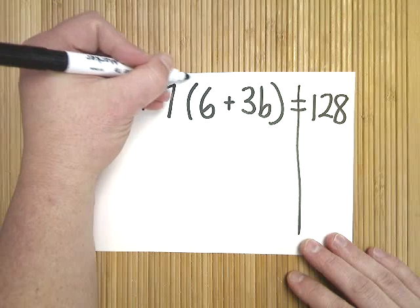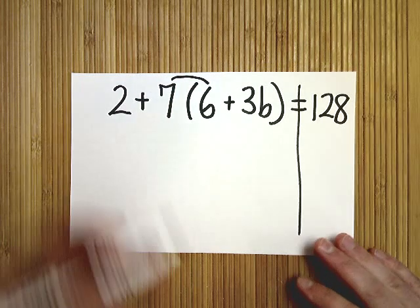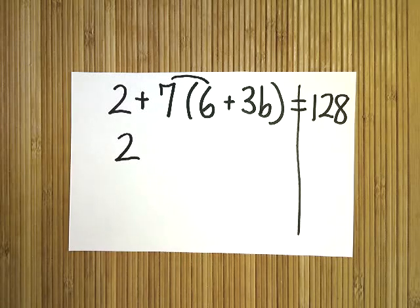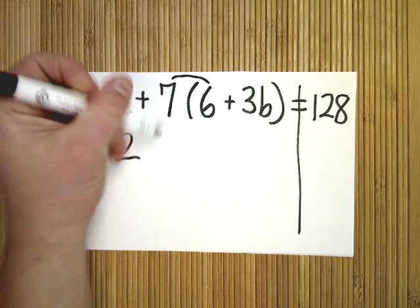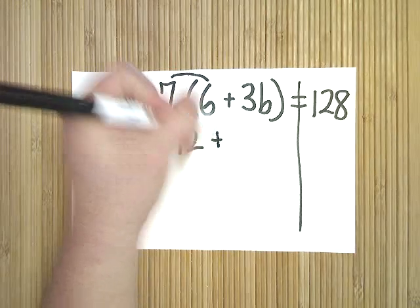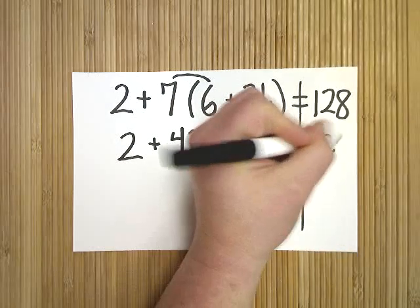So I go ahead and do 7 times 6. You can bring the 2 down so you get it out of your face. Then you do 7 times 6 which is 42. Then you do 7 times 3b which is 21b. So we have 2 + 42 + 21b = 128.